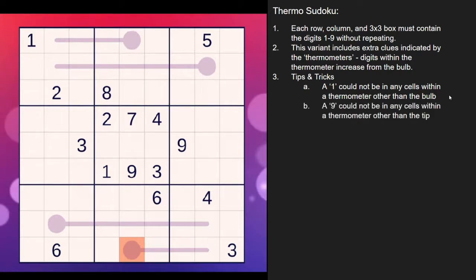And the nine is the exact opposite. A nine, if it's anywhere on the thermometer, it has to be at the tips. Because if you have it here in the middle, there's no number larger than nine that you can put after it. So that's helpful to know because if we look at this nine in regular Sudoku rules, if we're looking at this bottom box, the nine couldn't be here.